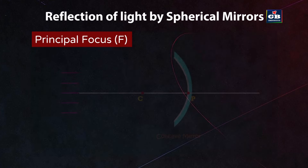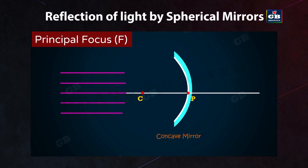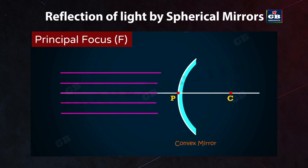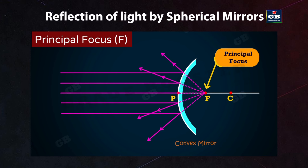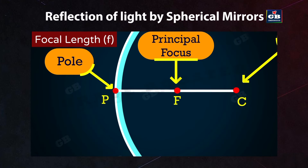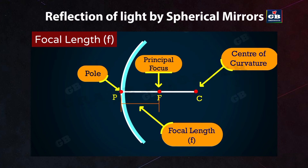Principal focus (F): for a concave mirror, rays parallel to the principal axis all meet at a point on the principal axis — this is the principal focus. For a convex mirror, reflected rays appear to come from a point on the principal axis — the principal focus. Focal length (f): the distance between the pole and the principal focus of a spherical mirror. Aperture: the diameter of the reflecting surface of the spherical mirror.